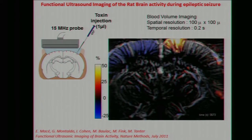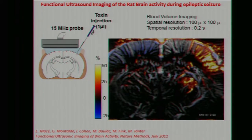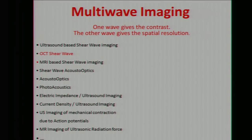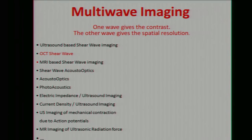This opens completely new perspectives for functional imaging with ultrasound. To conclude: multi-wave imaging is quite interesting. Ultrasound can be used to follow shear waves, but you can also think of using ultra-fast OCT to monitor shear wave propagation and make elasticity images with micron resolution instead of 100 microns. And with very fast OCT combined with Doppler, you can imagine doing functional imaging on the brain — not at the same depth as ultrasound, but quite interesting also. Thank you.